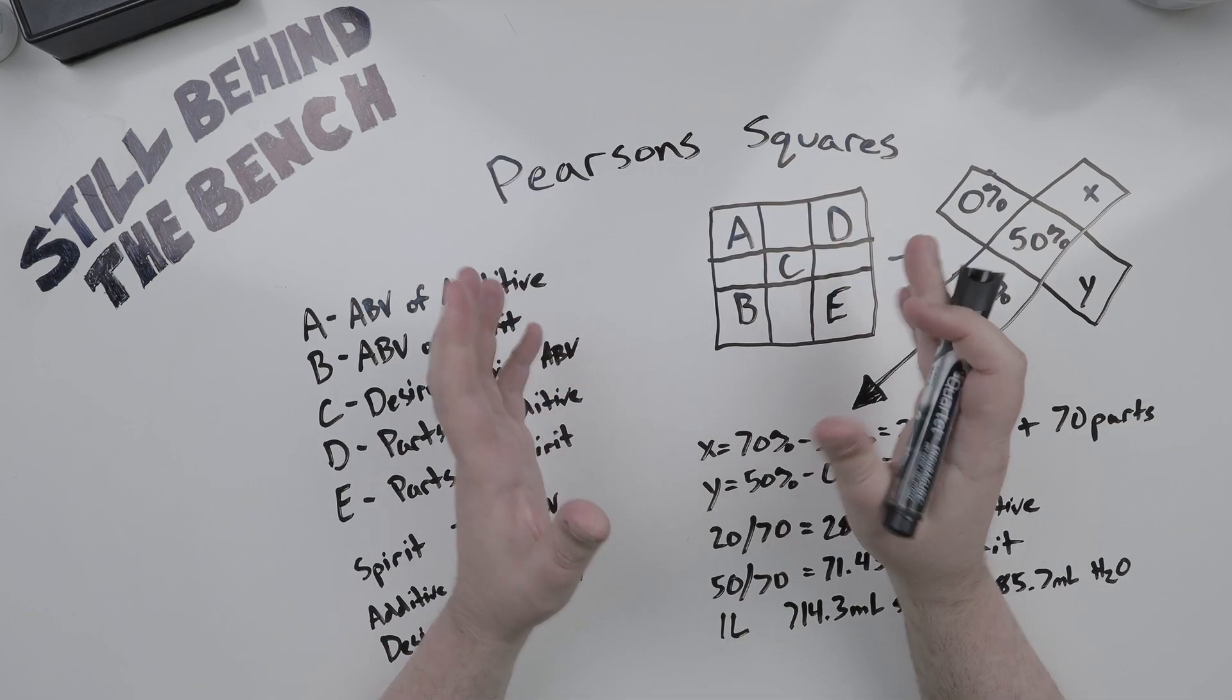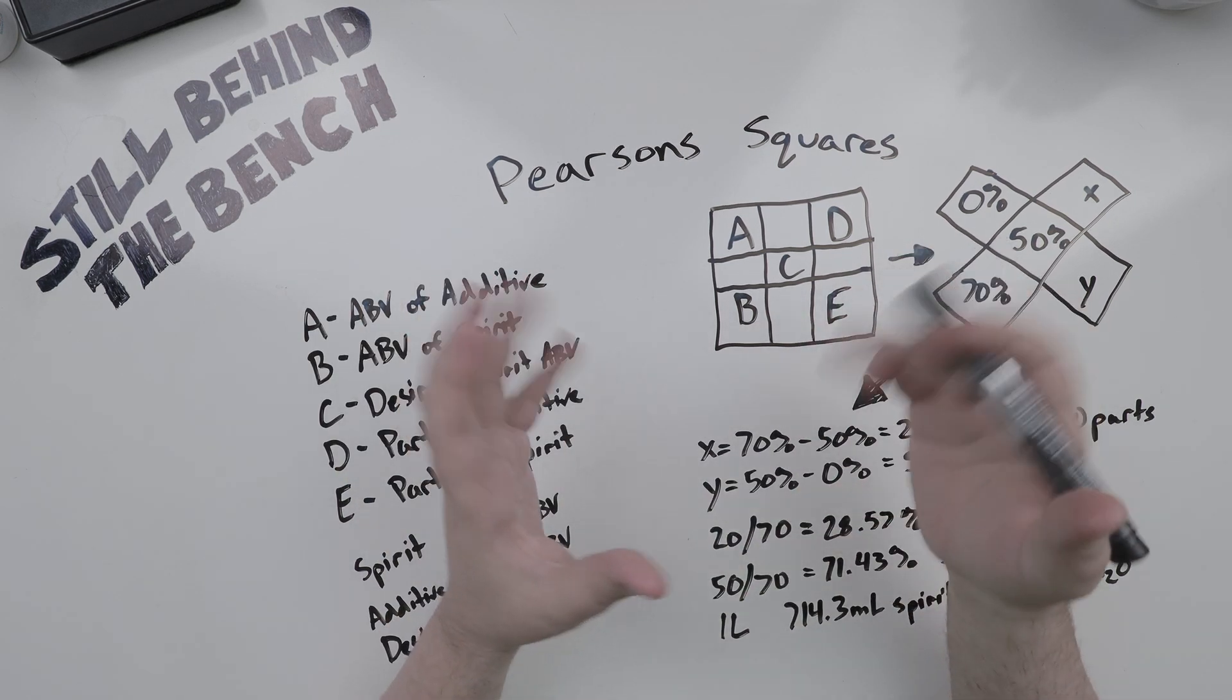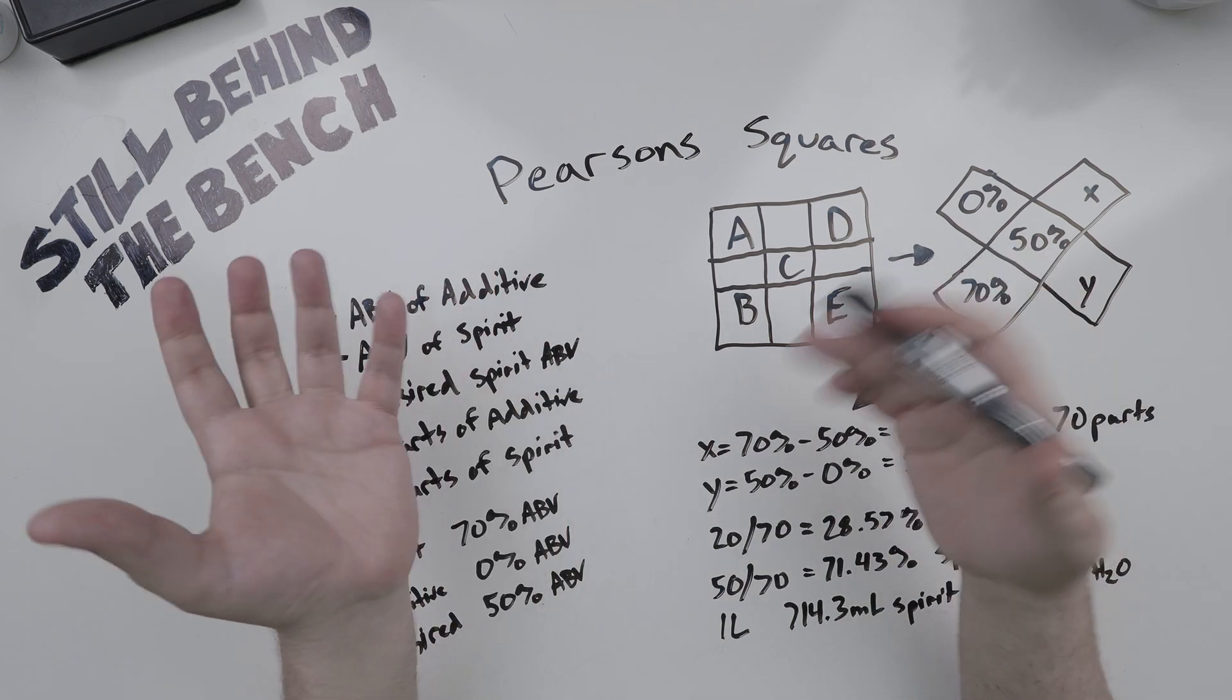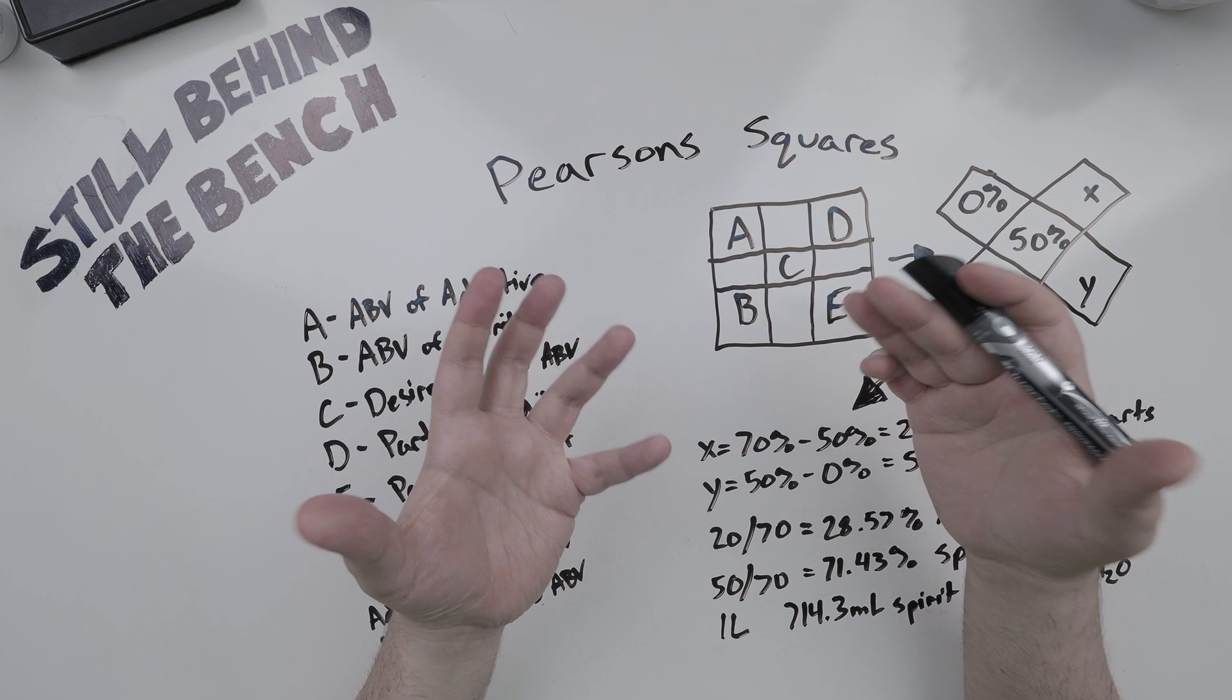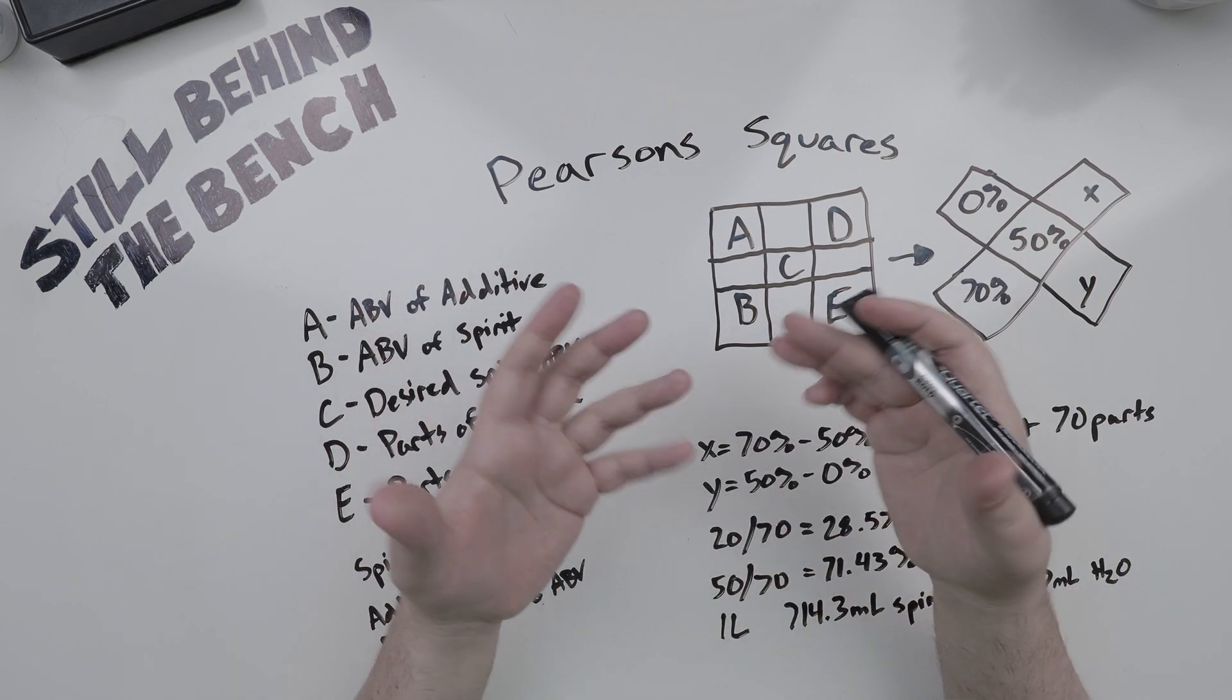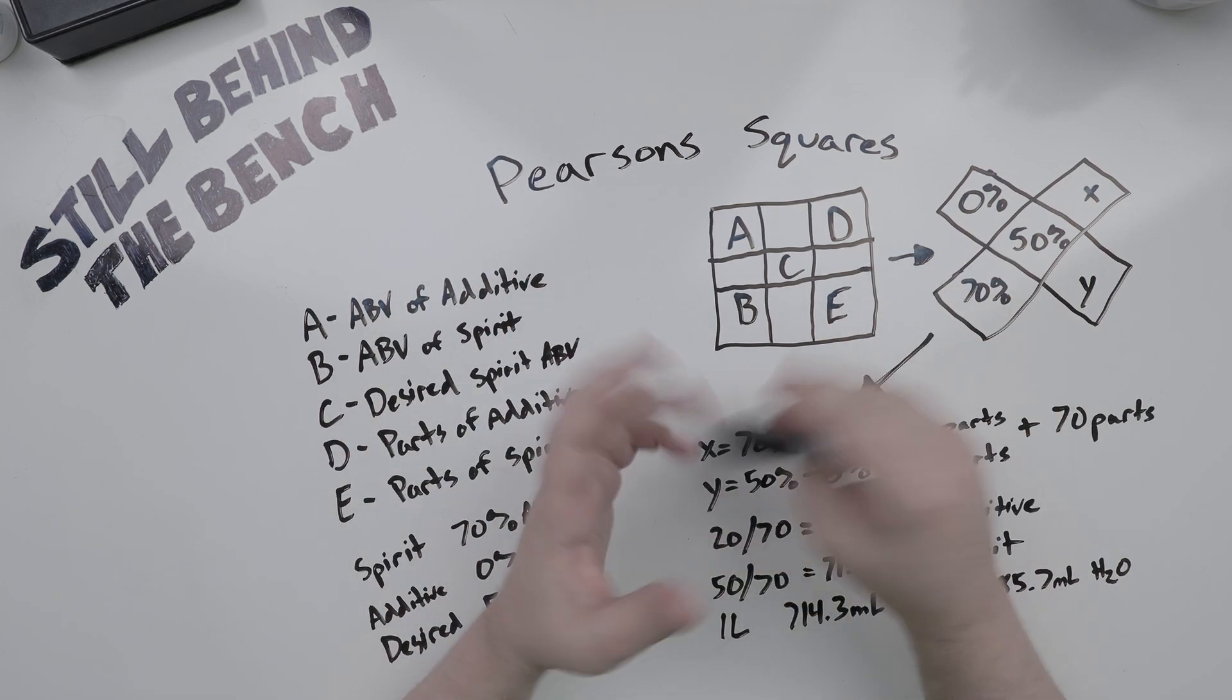So now we can look at Pearson's squares. Many of you may not have heard of Pearson's square before. A Pearson's square is just a way to visually lay out the math. You can use volume or mass. Using volume will introduce error, the partial molar volume issue. If you want a more accurate number, then you use mass instead.